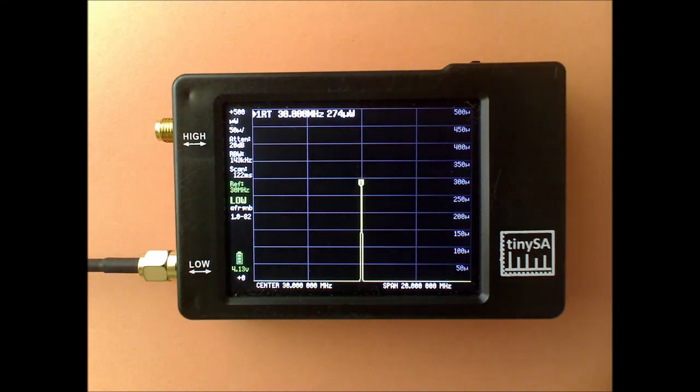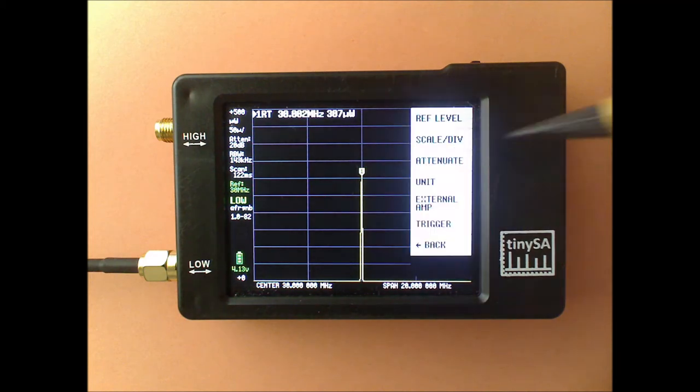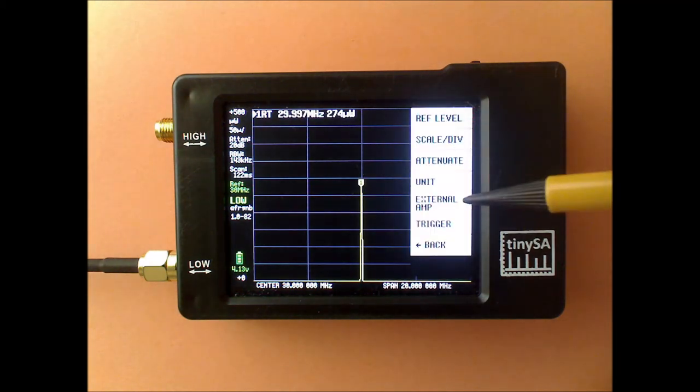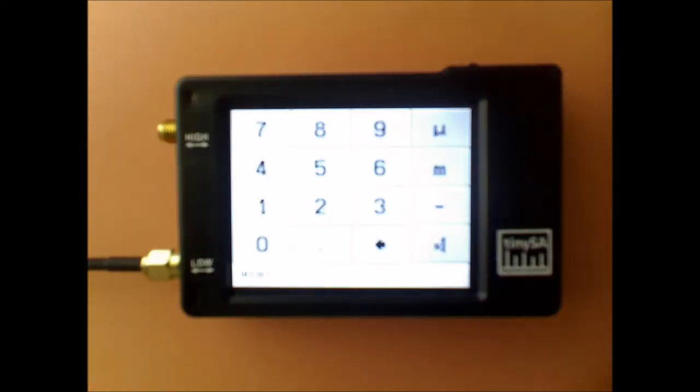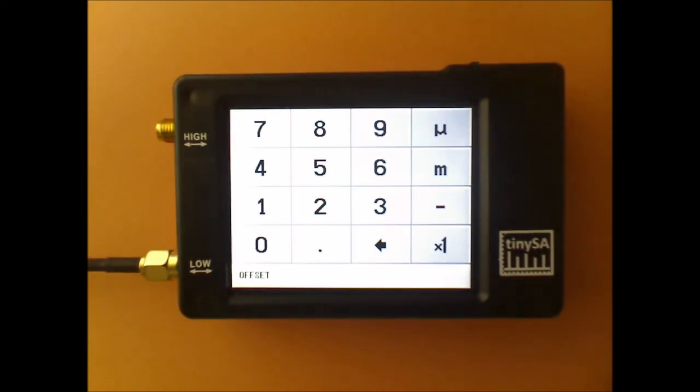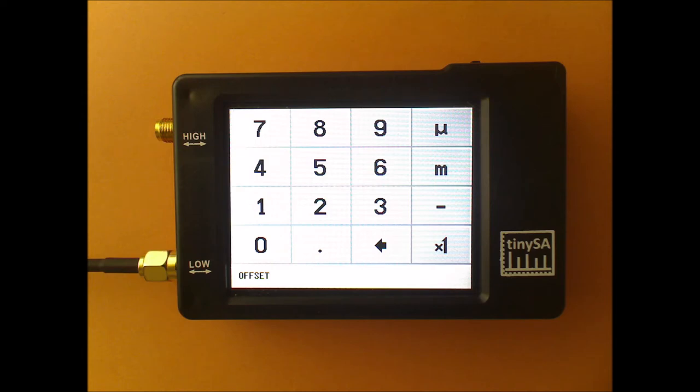Sometimes you want to measure very strong or very weak signal sources. And for that the external amp menu option is interesting. It allows you to specify the external attenuation or external amplification that has been applied to the signal. It's a known amplification or known attenuation.